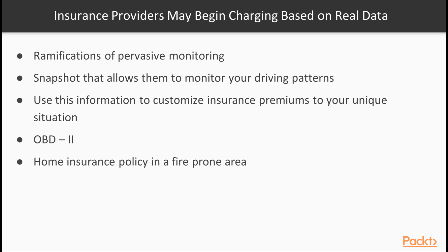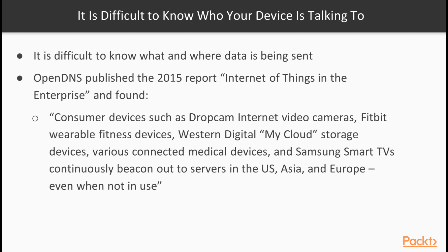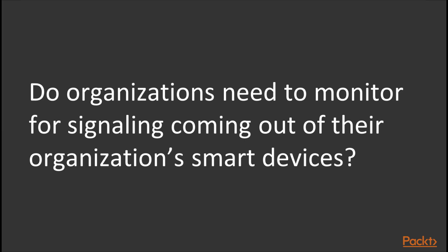Other insurance companies are already beginning to examine the benefits of using tools like drones to surveil their targets and gain deeper insight for policies. Consider a home insurance policy in a fire-prone area — does the insurance company have the right to send a drone over your property on a regular basis to make sure your vegetation is cut back sufficiently? Another interesting challenge associated with IoT is that it's sometimes difficult to know who specifically your IoT product is talking to. An OpenDNS report from 2015, titled 'IoT in the Enterprise,' showed that many consumer IoT devices were already being installed within network boundaries and beaconing out to servers located in far-off places — even when the devices were not in use.